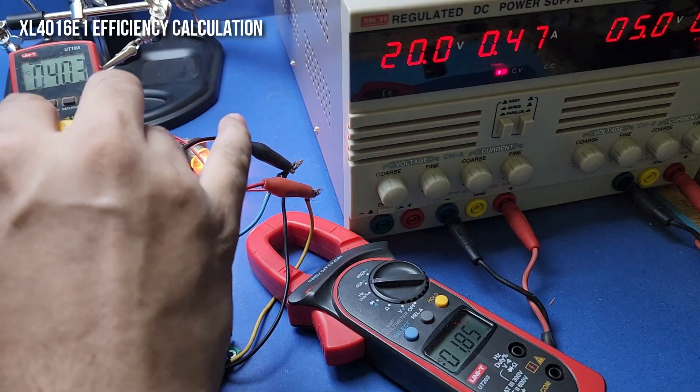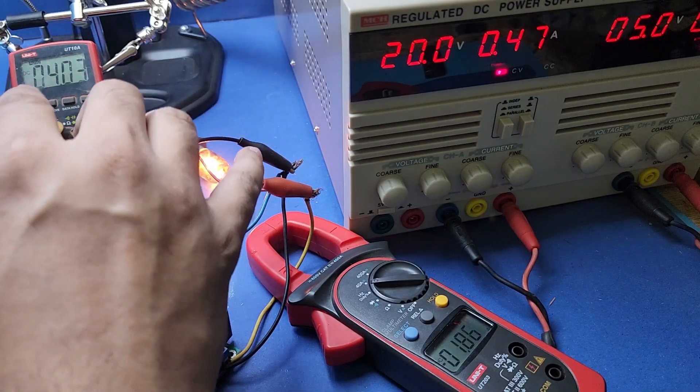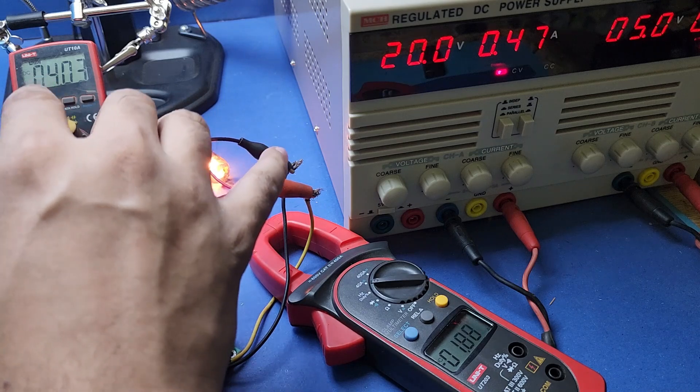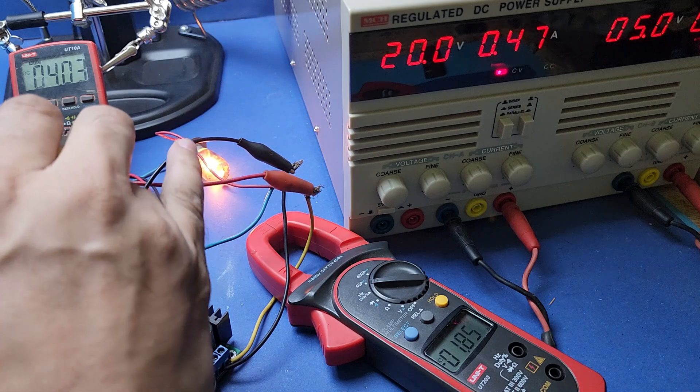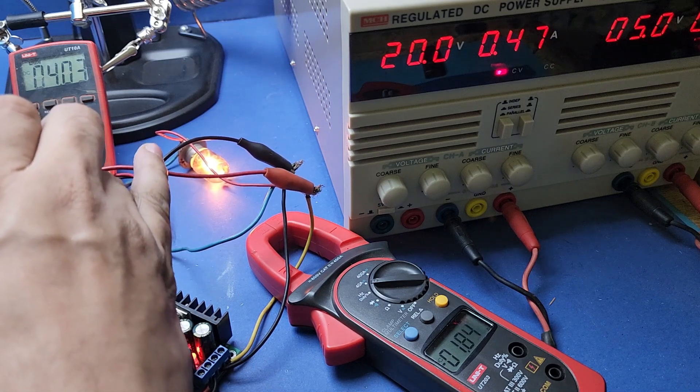XL4016 is an extremely efficient module for its price. It is so efficient that it can be used as a solar MPPT for up to 40 volt solar panel arrays.